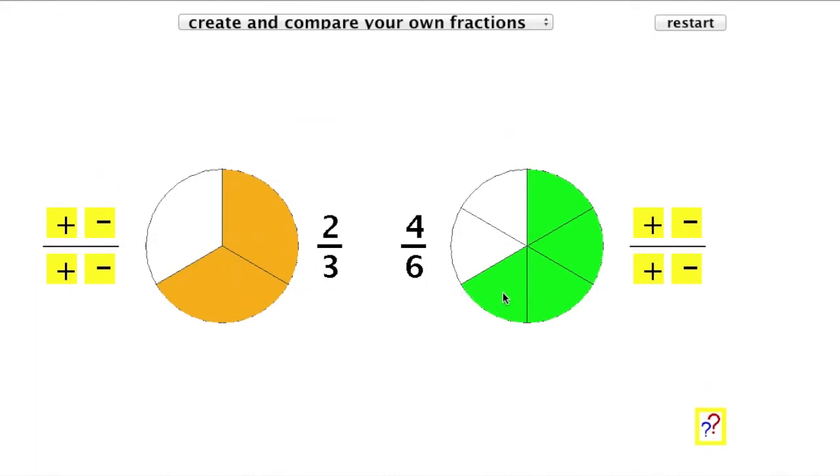But what if I'd used some other denominator here? Perhaps I might have used fifths. Could I have found a fraction based on fifths that's equivalent to two thirds? Well, here goes. Four fifths is clearly bigger than two thirds.